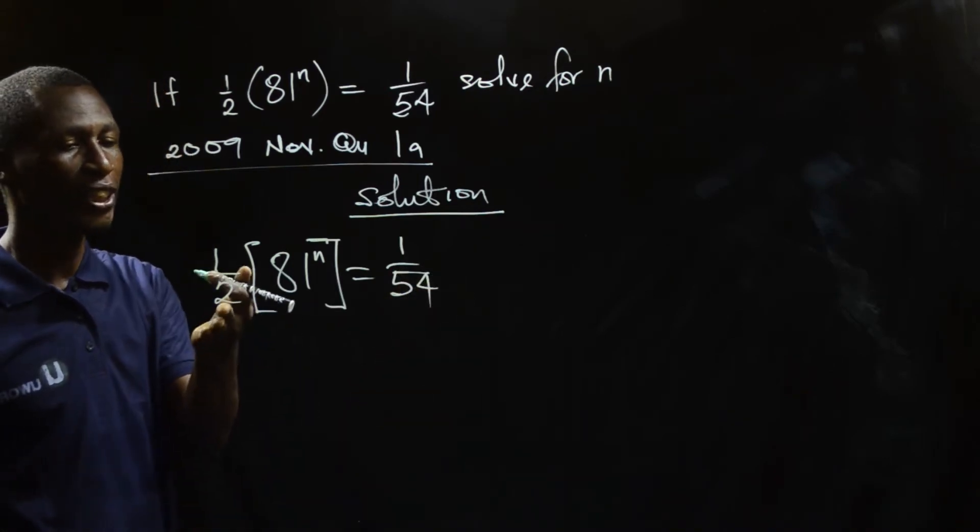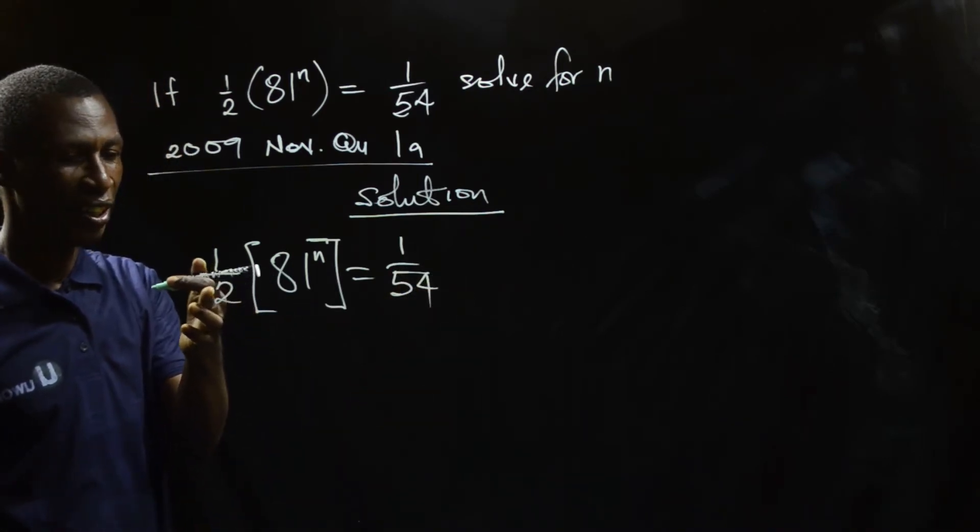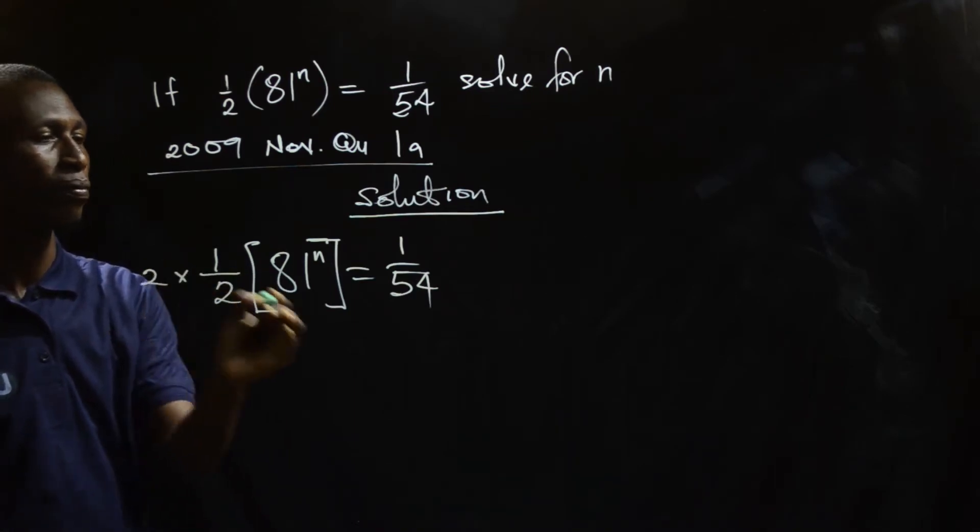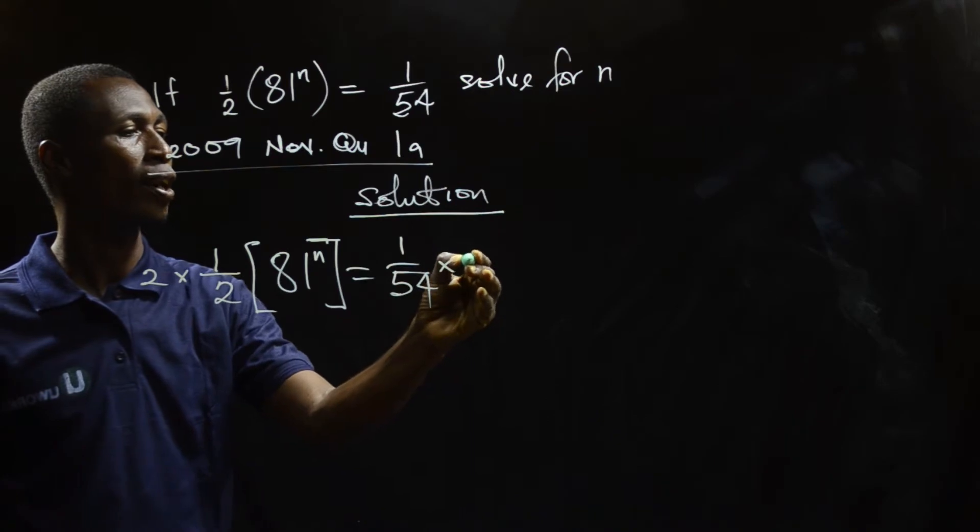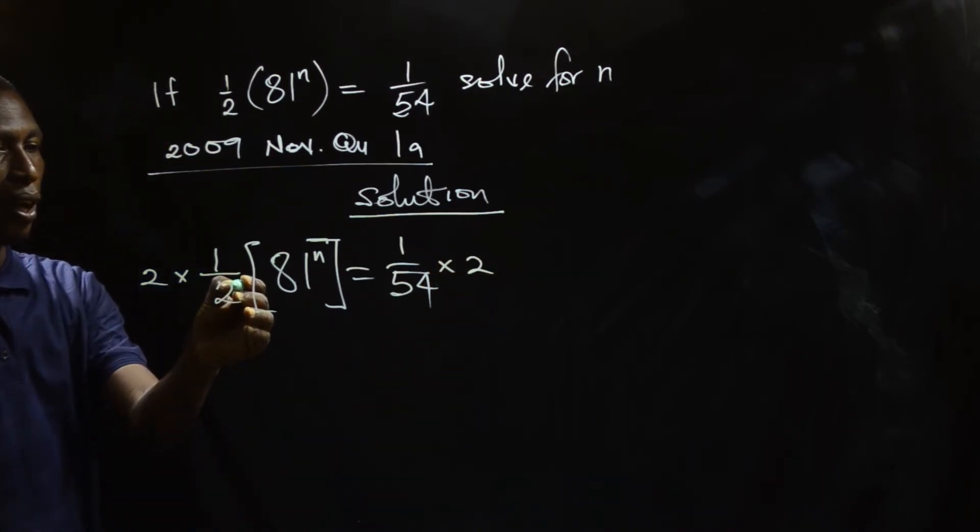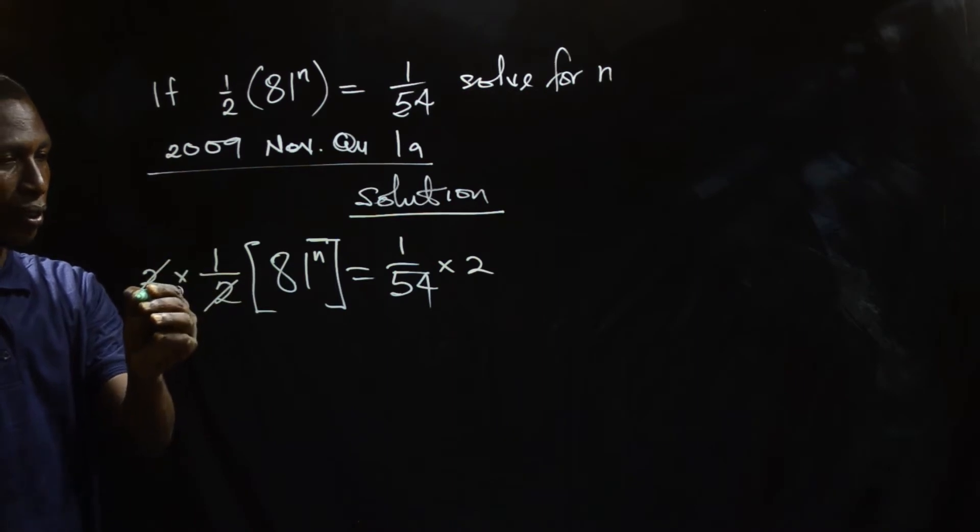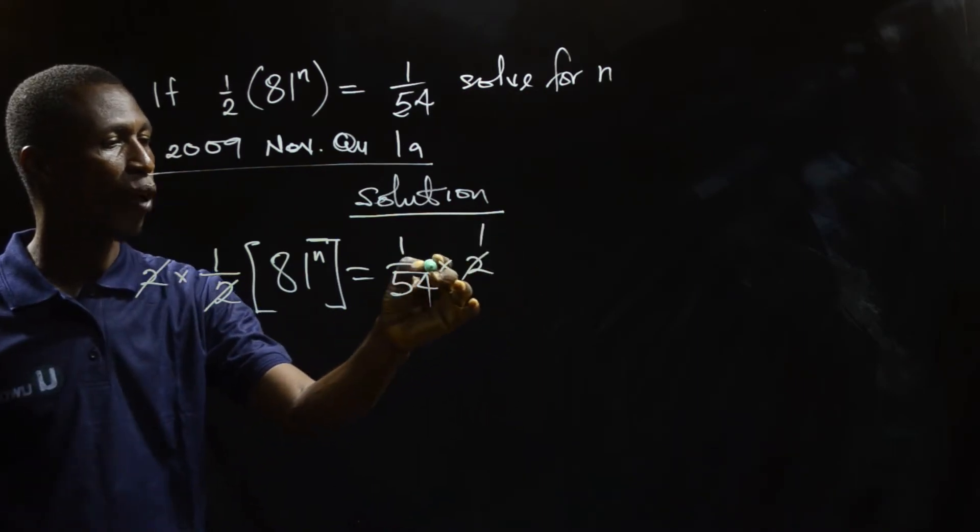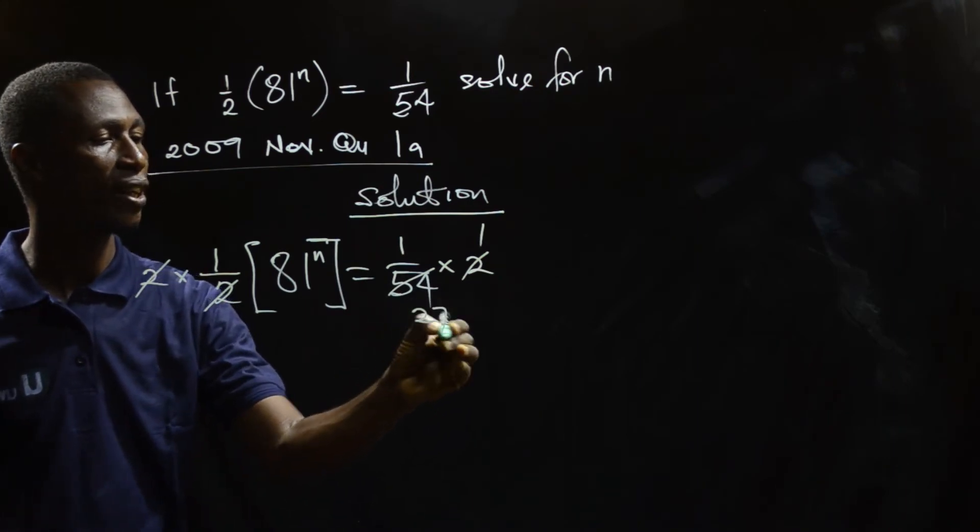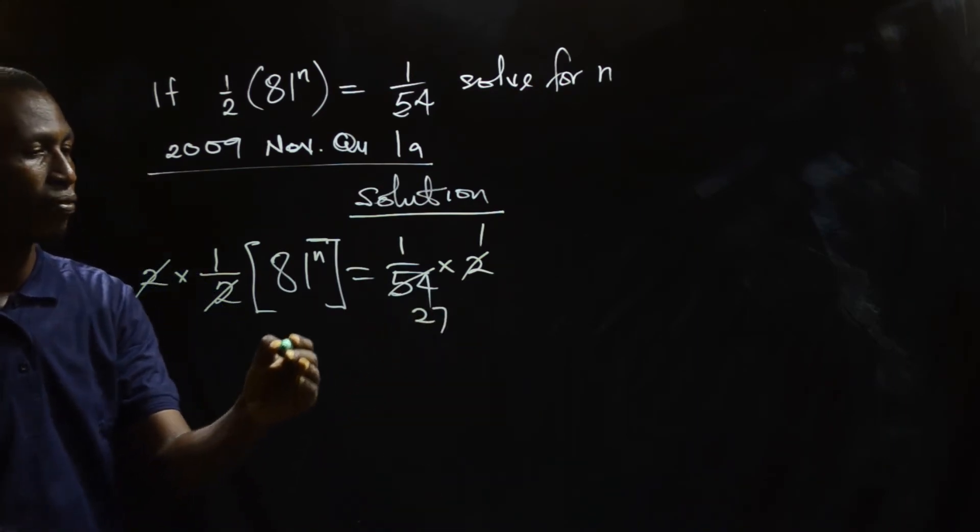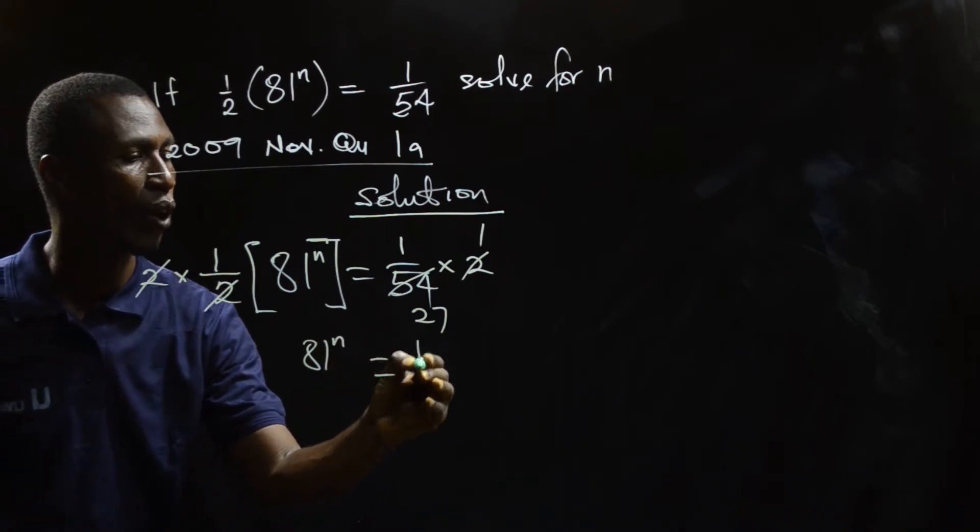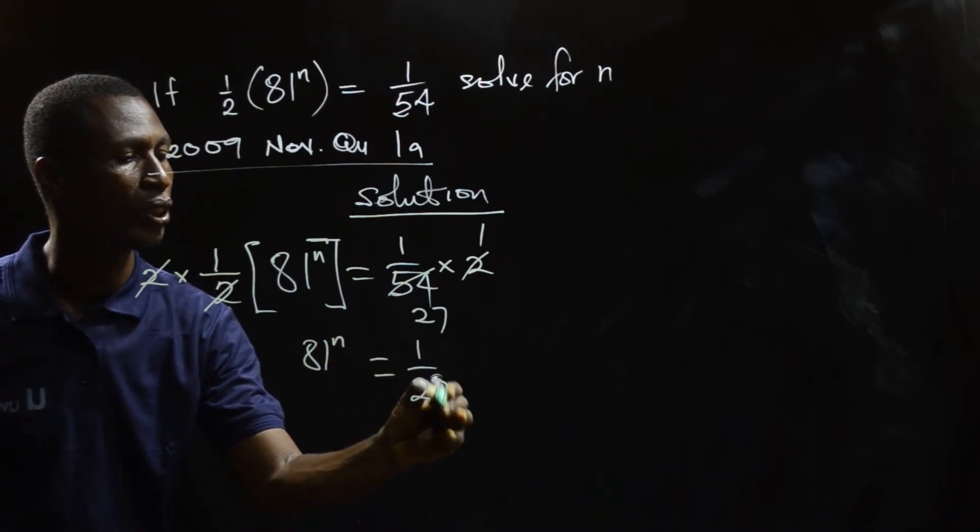What you do now is that you just have to multiply through by 2 on the half here. So I multiply here by 2 and I multiply here by 2. So when this one happens, 2 goes. Then this 2 will go to itself 1 and go to 54, giving 27. So I now have 81 to the power n equals 1/27.